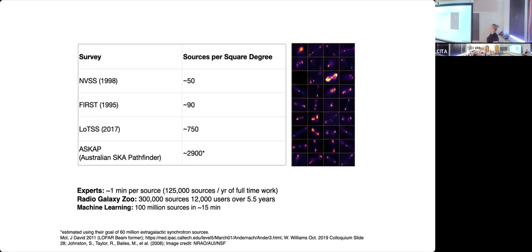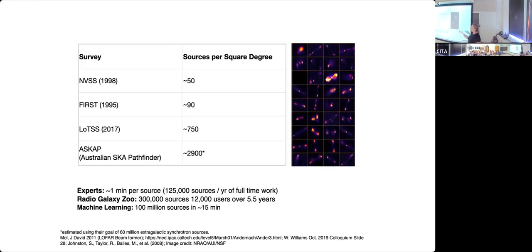It is actually quite a complicated machine learning problem, but extremely important because we're going to need to do this a lot. The numbers have been increasing over the years — the MBSS survey in the 1990s gives about 50 sources per square degree, FIRST gives roughly 100, from LOFAR we get roughly a thousand, from ASKAP we're getting a few thousand, and if you go up to MeerKAT or SKA sensitivities, we're going to be getting tens and hundreds of thousands per square degree.